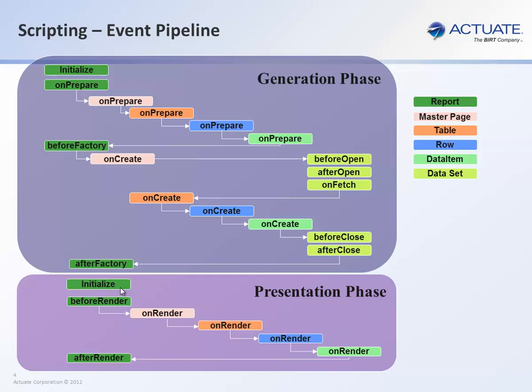There are also events that get called within a loop. For example, the onFetch method would get called continuously until fetch returns null, and thus it knows that's the end of the answer set. Additionally, on the onCreate method, once it calls the onCreate for every data item within the row, it will then call the onCreate of the next row, and that will again be called in a loop until all the rows are created for the report. Similarly, the onRender of the data item, after the last data item within a row, will then call the onRender of the next row, and thus that will be in a loop until all the rows are rendered.